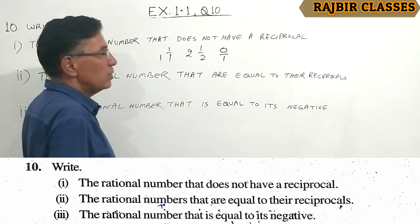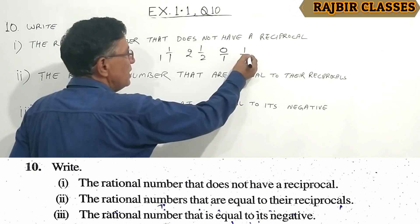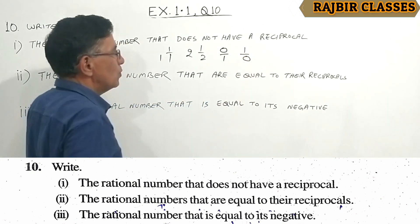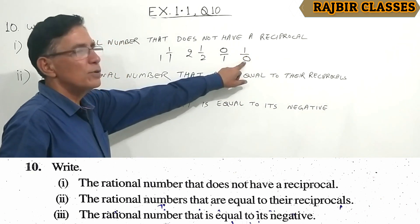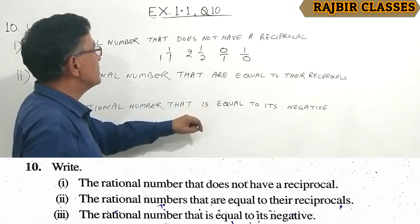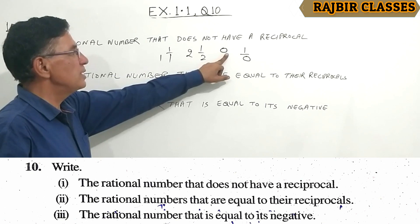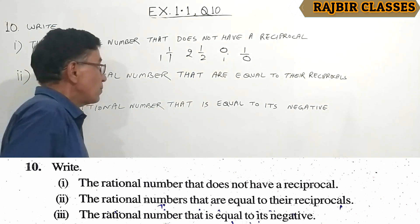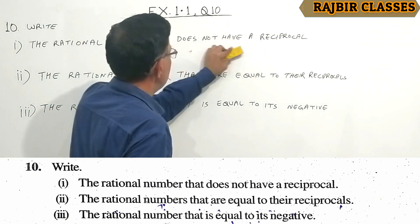what is its reciprocal? 1 by 0. And 1 by 0 is not defined. This means 0 does not have a reciprocal. The answer is 0.